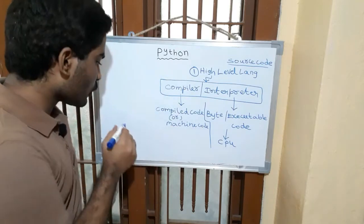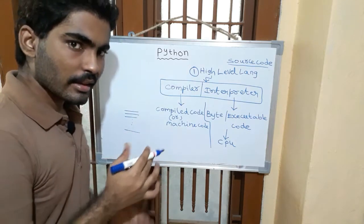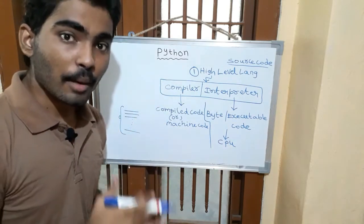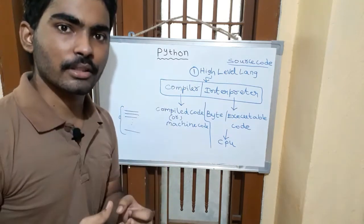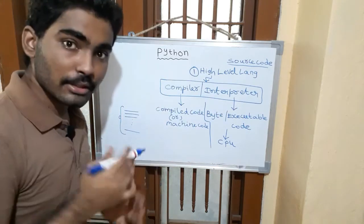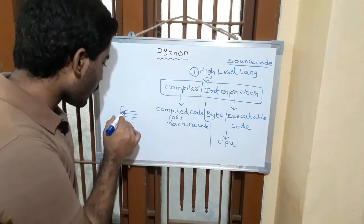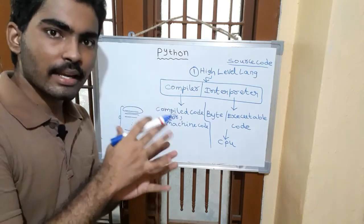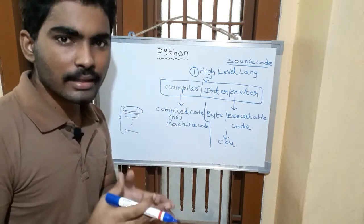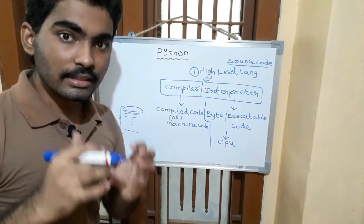For example, if a program has 10 lines, when the compiler processes those 10 lines, all lines are compiled together first and then converted to machine code — if there is an error in any line, it shows all errors. But the interpreter is different: it converts each line one at a time into machine code, and when there is an error in a line, it stops at that line. So the compiler is faster overall, while the interpreter gives line-by-line feedback.